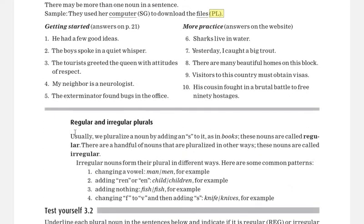Now the second thing to discuss: regular and irregular plurals. Regular plurals — we add 's' or 'es' at the end. For example: book/books, pen/pens. Irregular plurals are different: 'man' becomes 'men', not 'mans'; 'child' becomes 'children'; 'fish' doesn't change; 'knife' becomes 'knives'. So regular plurals means adding 's' or 'es', while irregular plurals means either changing the whole word or making no change at all.